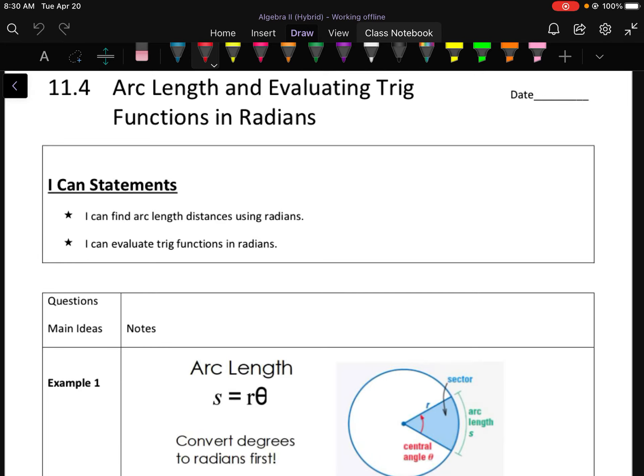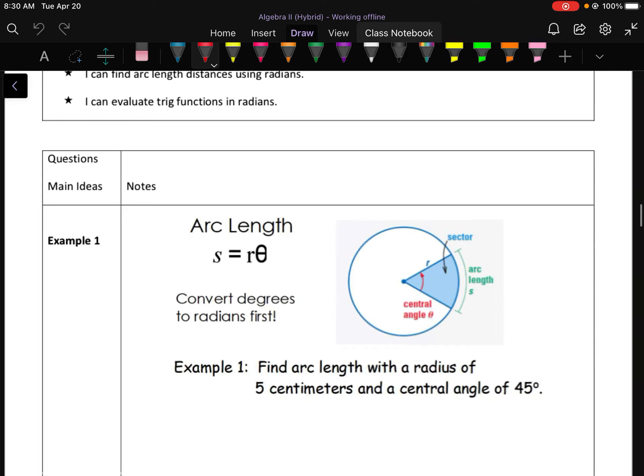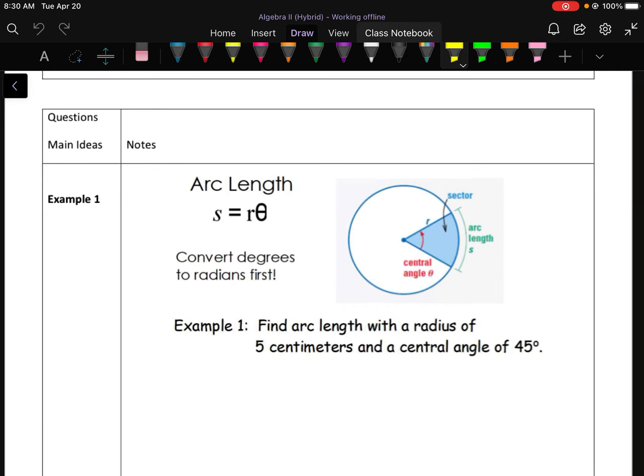Alright, we are continuing on with section 11.4, arc length and evaluating trig functions in radians. So first of all, to find arc length, this is the formula that we are going to need. Our arc length S is equal to R, which is your radius, times your central angle. But the key is here, your central angle has to be in radians in order to use this formula. So anytime you see an angle measure given in degrees, convert it to radians first, multiply that by your radius, and that's it. You are done.